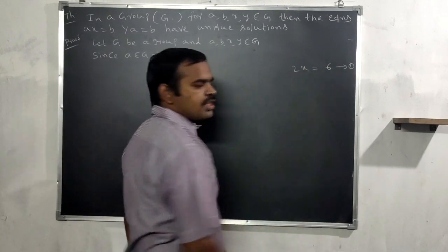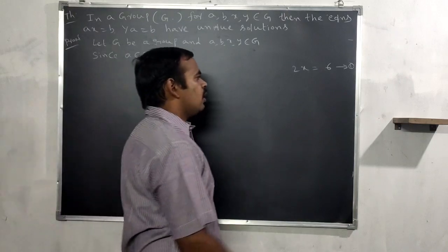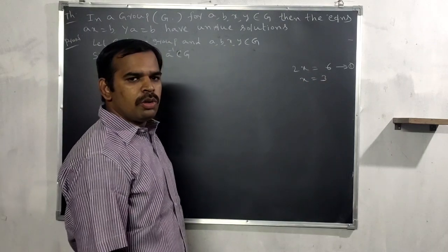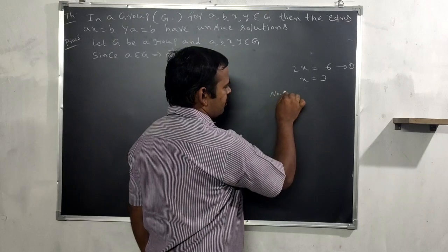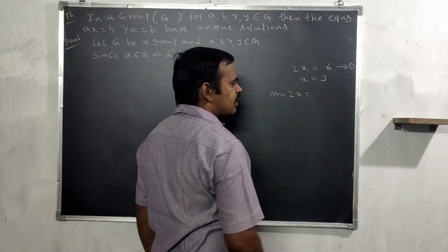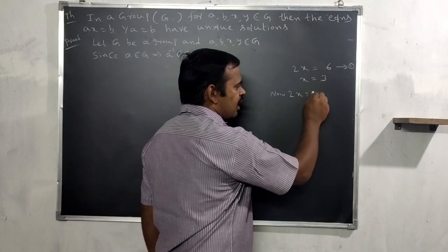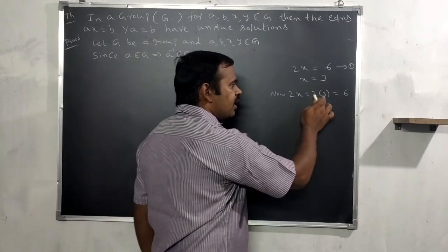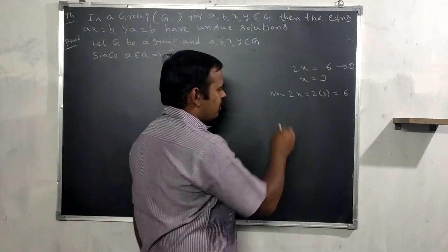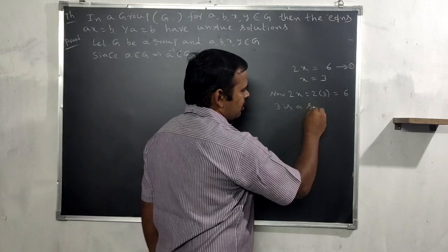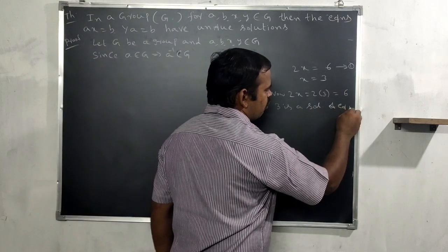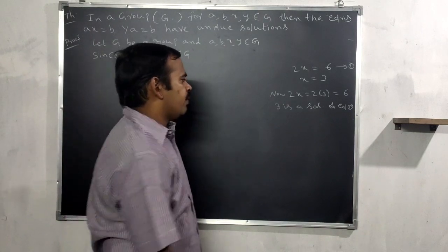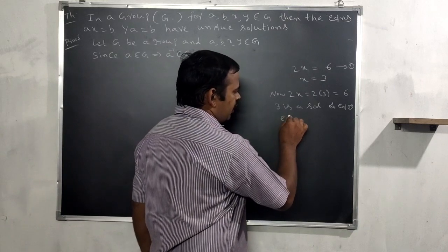First, a small motivating example. Consider the equation 2x = 6. Solving, x = 6/2 = 3. Checking: 2 times 3 equals 6. So x = 3 is a solution of this equation.